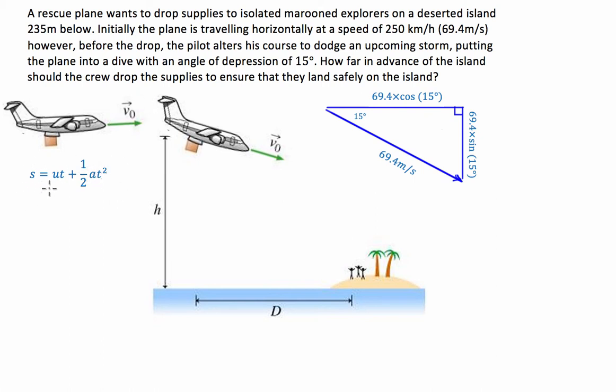Now, we can just enter in what we know. So the distance it has to travel is 235 metres and that's equal to its initial velocity in the vertical direction, which is equal to 69.4 sine of 15 degrees. So let's write that in. We have times time plus one half times acceleration due to gravity times time squared.